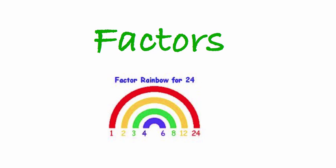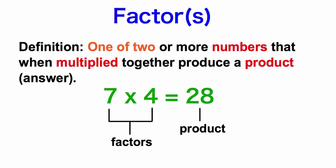In this video, we are going to cover what factors are and also how to find the greatest common factor of two pairs of numbers. So to begin with, we're going to start with what is a factor. You should be taking notes in your notebooks — definitions are definitely something you need to write down. The title of your notebook right now should be 'Factors.' A factor is one of two or more numbers that when multiplied together produce a product.